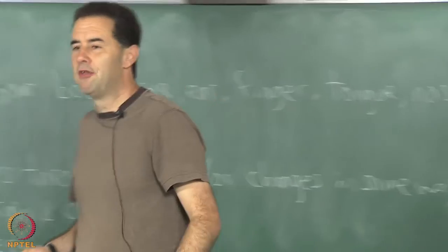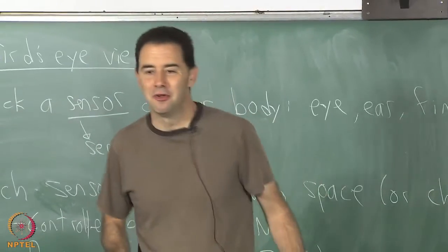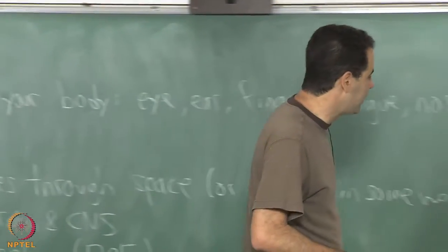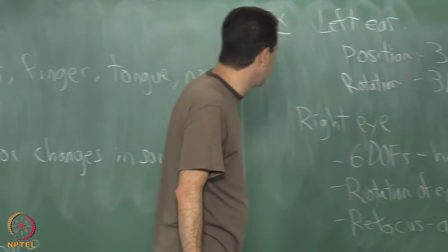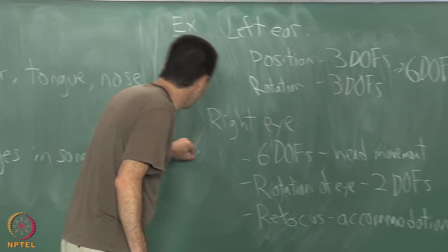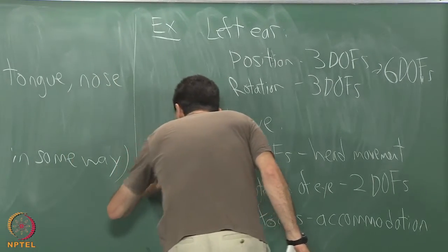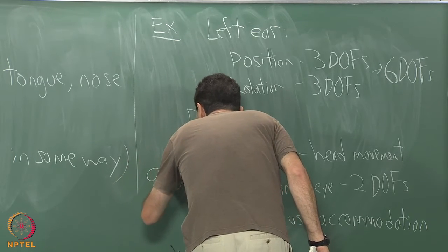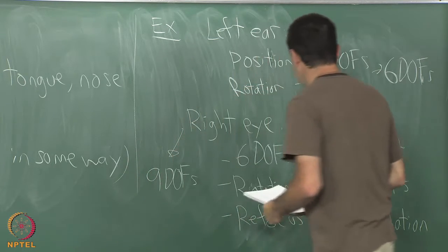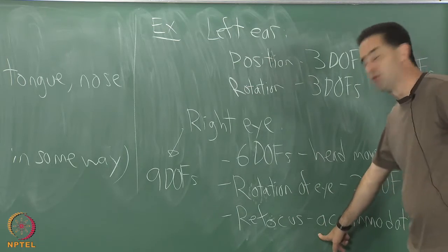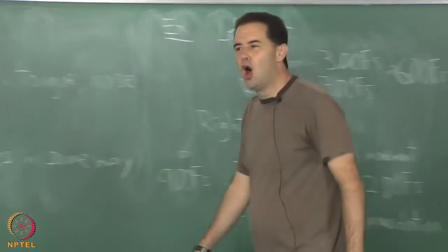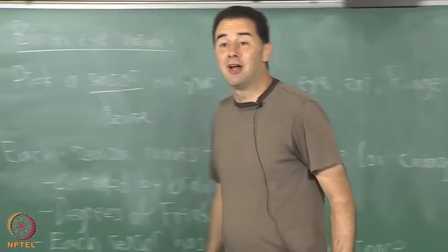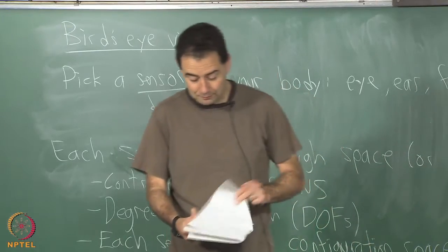Scientists refer to this as accommodation. In engineering we would call that focus, but it's good to know the word for it. So the eye can accommodate. I guess if I put all of this together maybe this ends up with about nine DOFs if I consider focus to be a single parameter. I get six plus two plus one for this.